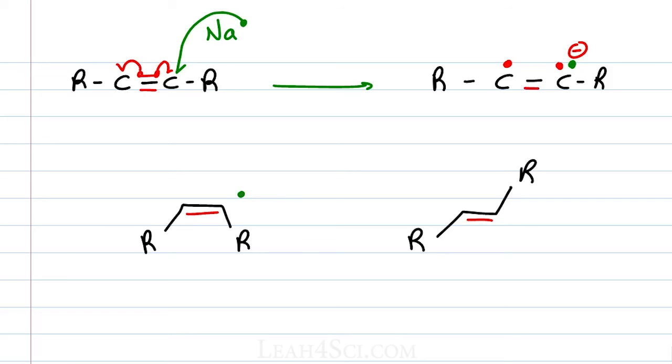On the left we'll show the lone pair of electrons cis to the radical. On the right we'll show the lone pair of electrons trans to the radical.